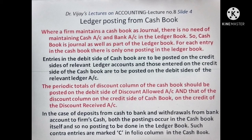Slide 4 explains Ledger Posting from Cash Book. Where a firm maintains a Cash Book as journal, there is no need to maintain Cash Account and Bank Account in the Ledger Book. So Cash Book is journal as well as part of the Ledger Book. For each entry in the Cash Book, there is only one posting in the Ledger Book. For each entry in the debit side of the Cash Book, posting is given on the credit side of the relevant Ledger Account. For each entry in the credit side of the Cash Book, posting is given on the debit side of the relevant Ledger Account.